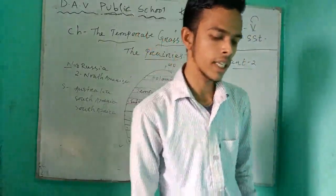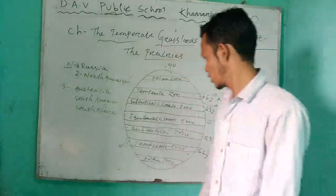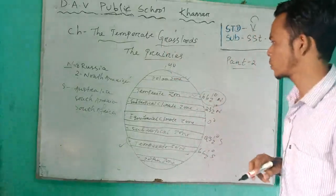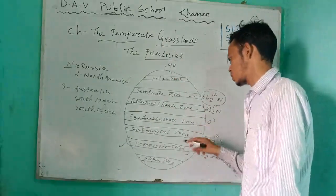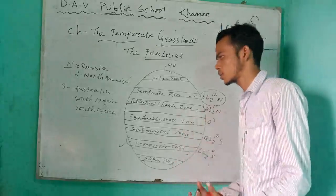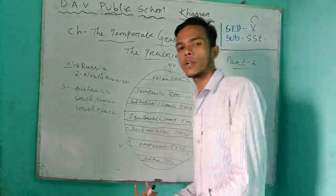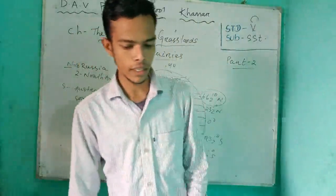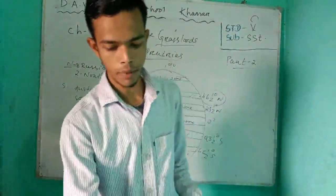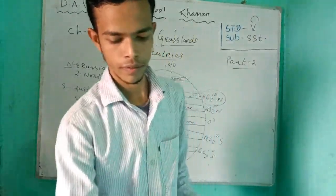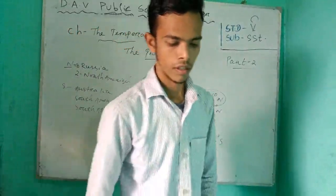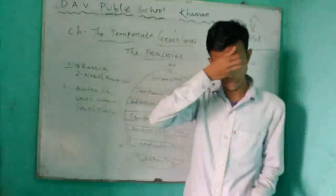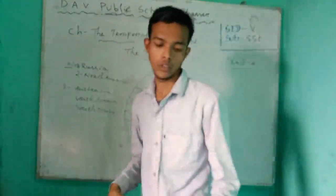That is a very interesting chapter — temperate grassland. Remember: polar zone, temperate zone, subtropical climate zone, equatorial zone, subtropical zone, temperate zone, polar zone, subtropical zone, temperate zone, polar zone, and equatorial zone. That part is very easy to remember.